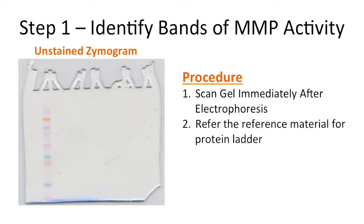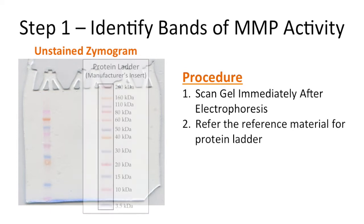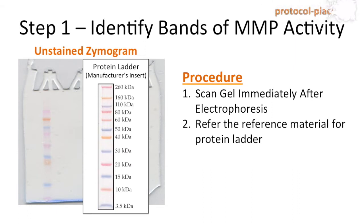The next thing you're going to want to do is refer to the reference material that comes with your protein ladder. This is the way a typical protein ladder reference material will look. They've already identified the molecular weight of each of these bands — the pink band at the top corresponds to 260 kilodaltons, the orange one 160, and so forth.